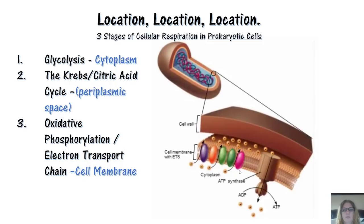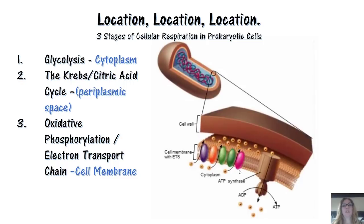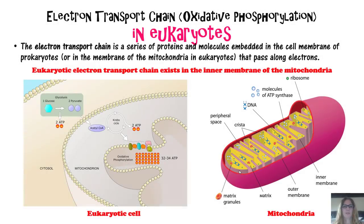Prokaryotes do not have mitochondria. In a sense you can think of them as being mitochondria themselves — we believe that our mitochondria probably evolved from prokaryotic cells.